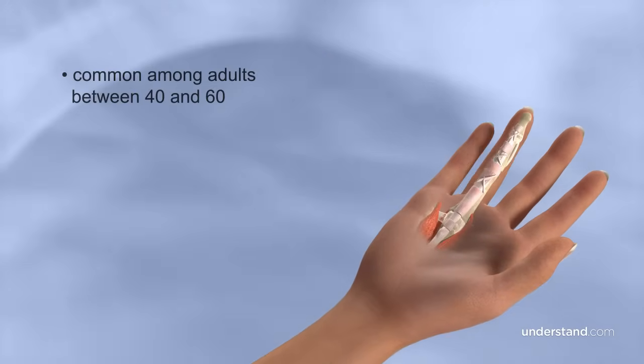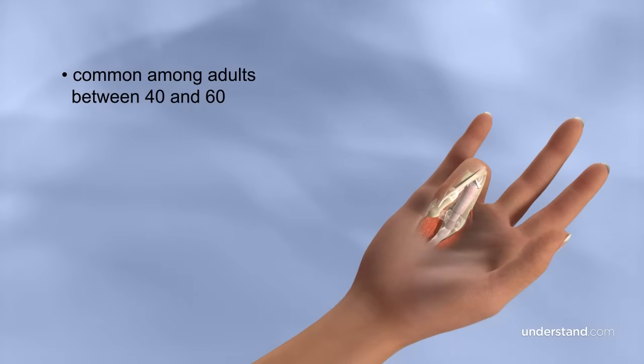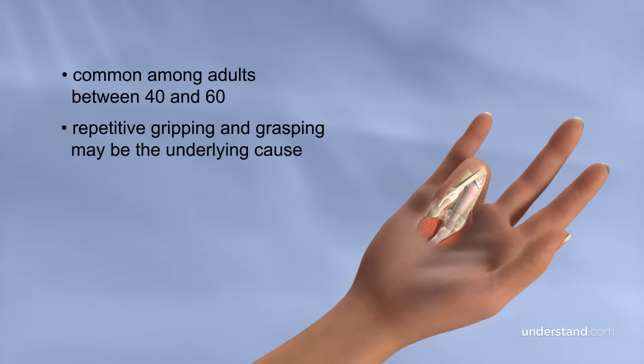Trigger finger is a common hand condition among adults between 40 and 60 years of age, and repetitive gripping and grasping is often the underlying cause of the condition. While the condition can occur throughout the day, it's often worse in the morning.